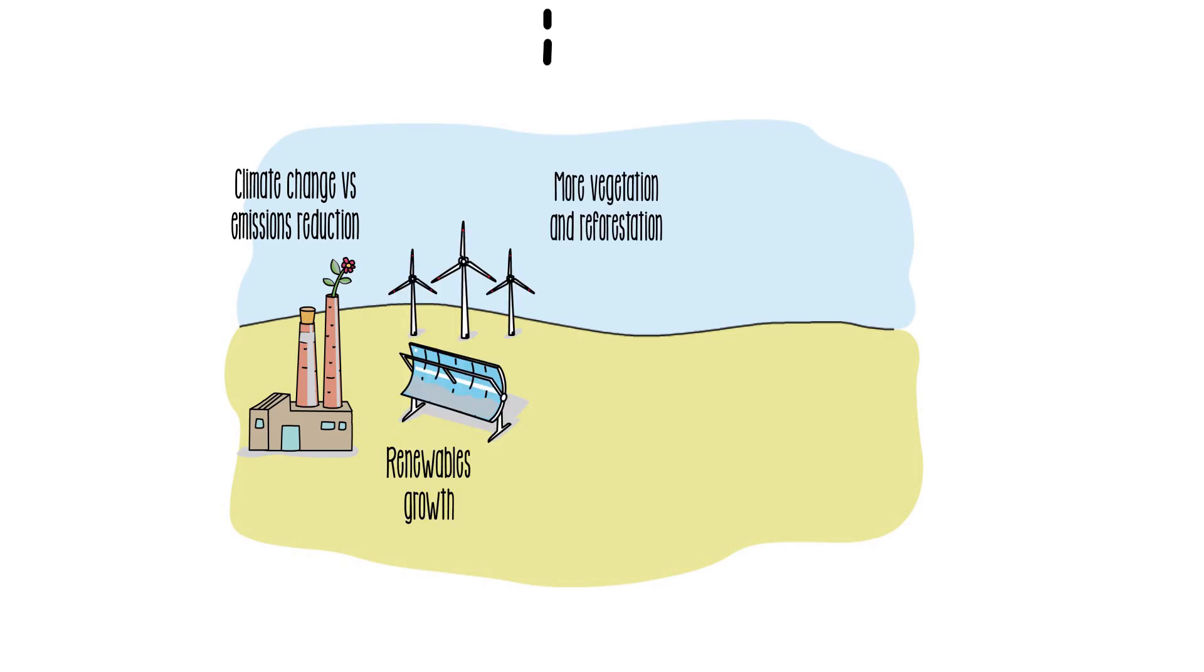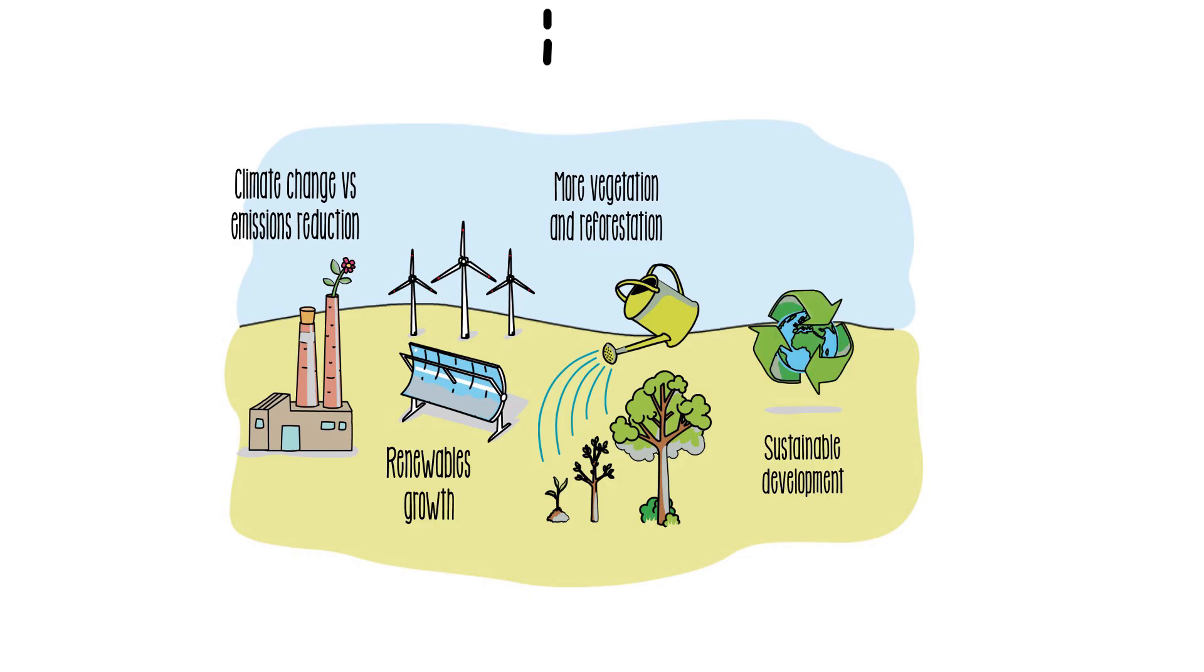Summarizing, the way we consume energy is the main contributor to climate change, and carbon neutrality helps to change our habits and includes emissions reduction and renewable energy growth. In short, it is a responsible attitude toward the environment that contributes to sustainable development.